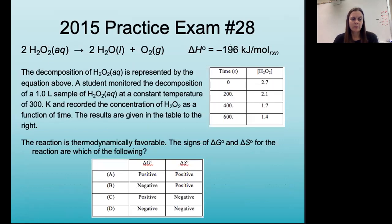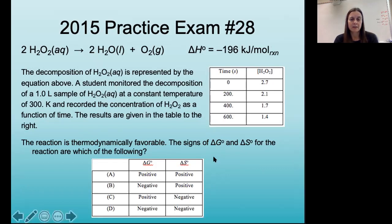One more practice problem: the decomposition of hydrogen peroxide into water and oxygen gas. A student monitors the decomposition at constant temperature and records the concentration of hydrogen peroxide as a function of time. It tells us the reaction is thermodynamically favorable — anytime a reaction is thermodynamically favorable, we know the sign of delta G has to be negative. So we're looking at option B or option D. Then the question is: what is the sign of delta S? We're going from an aqueous sample to two moles of liquid and one mole of gas, so we expect an increase in entropy. We choose option B.